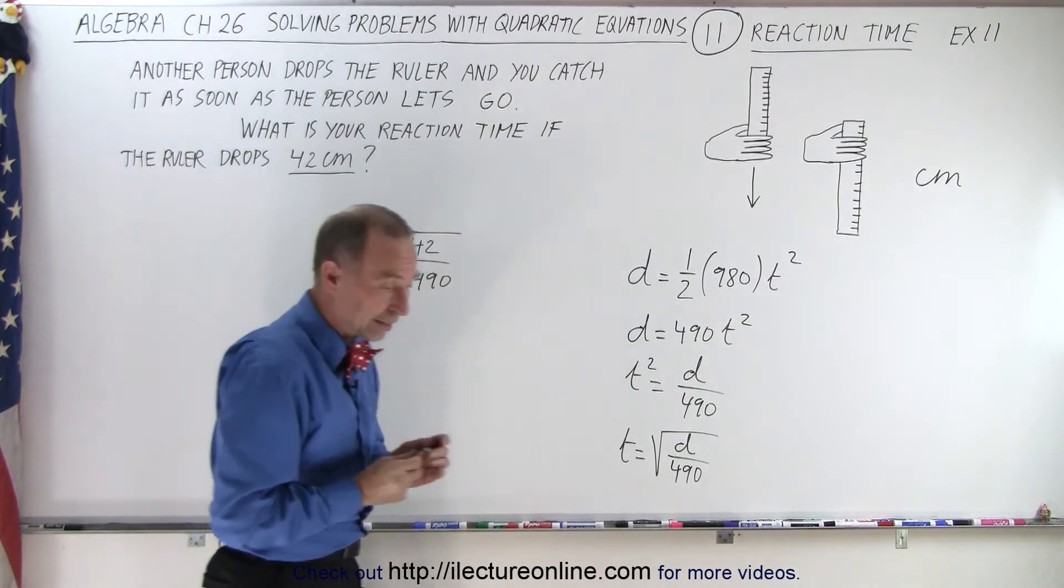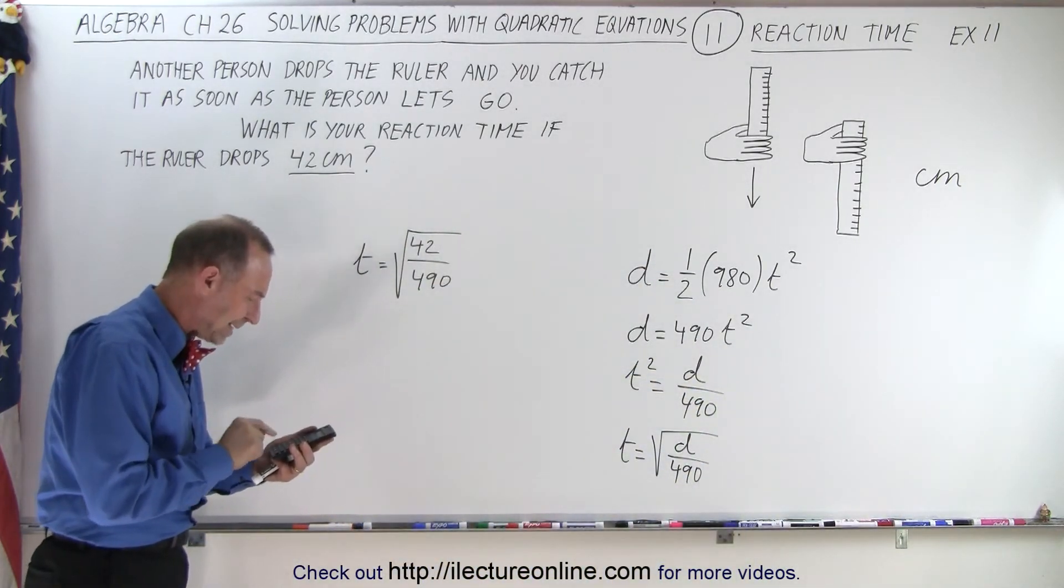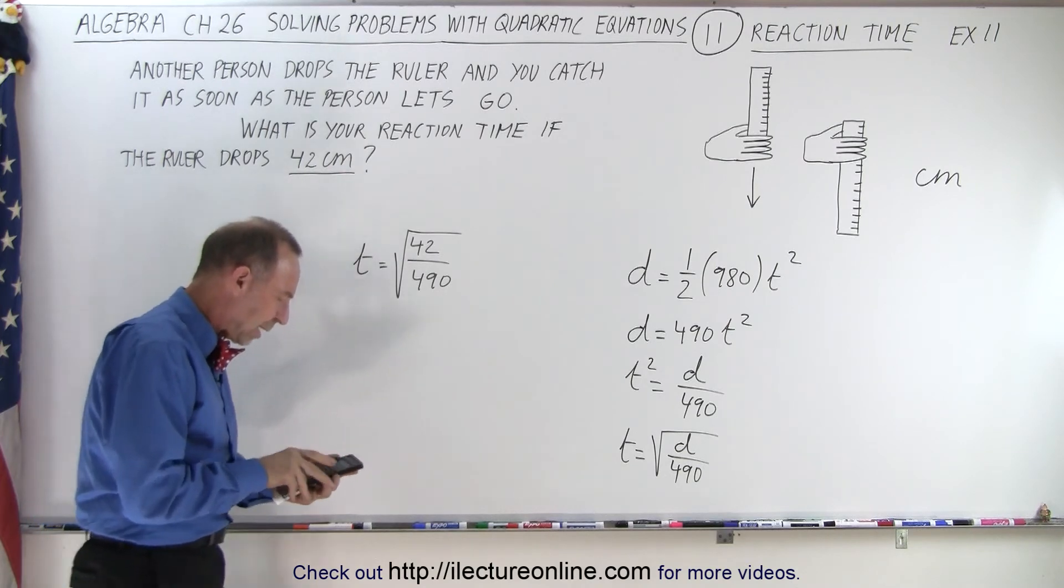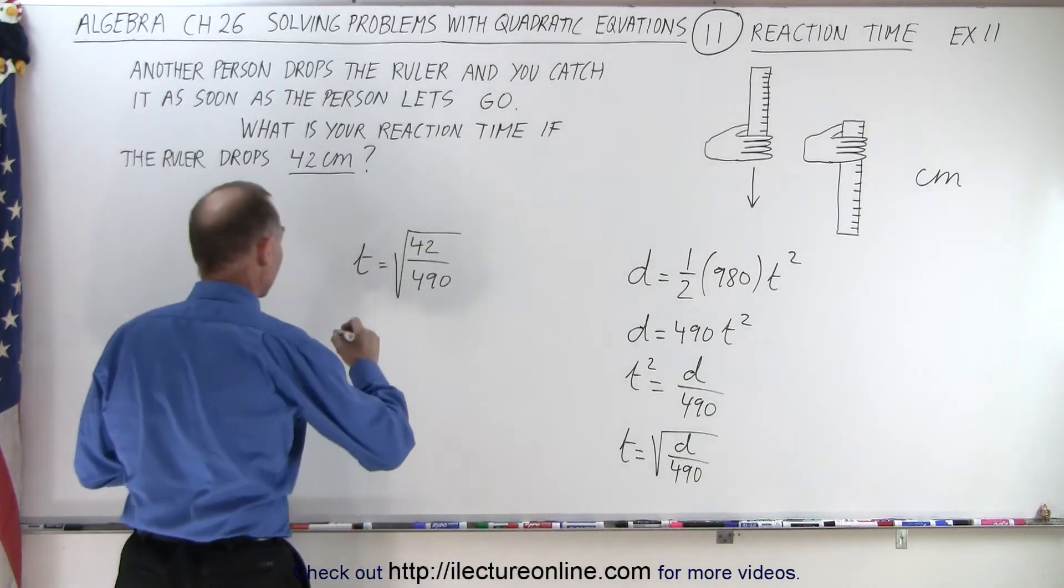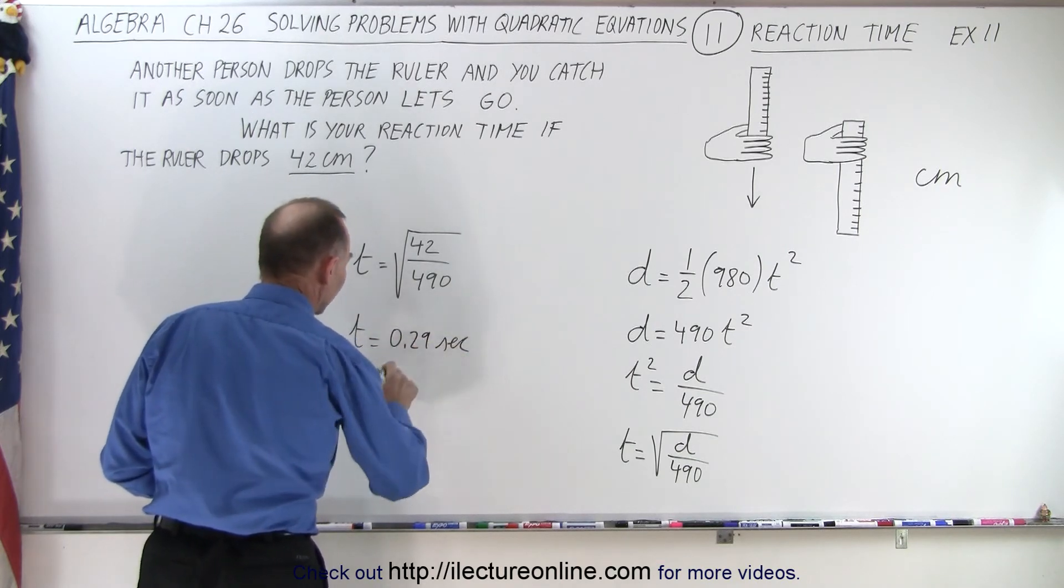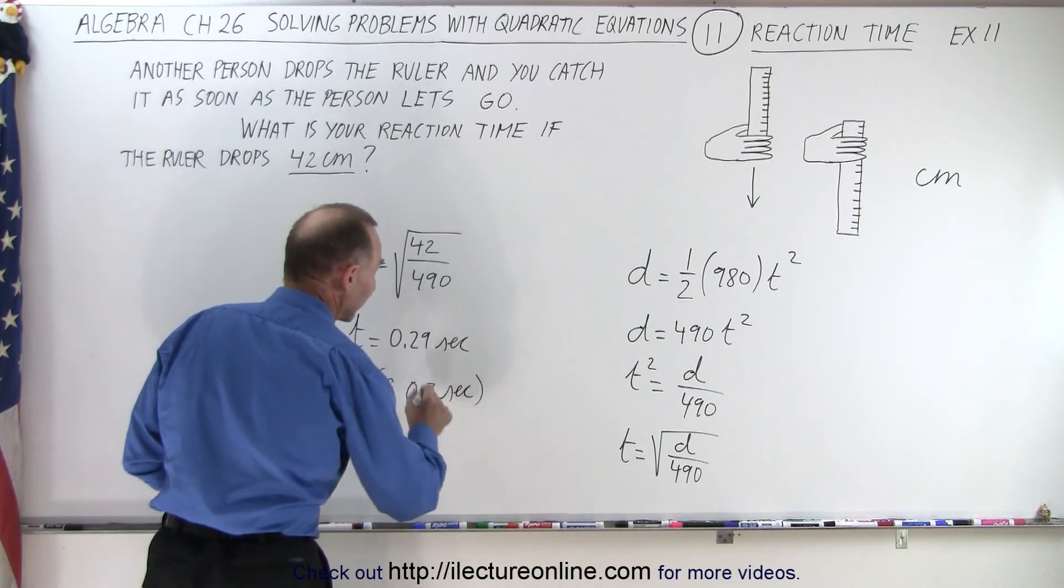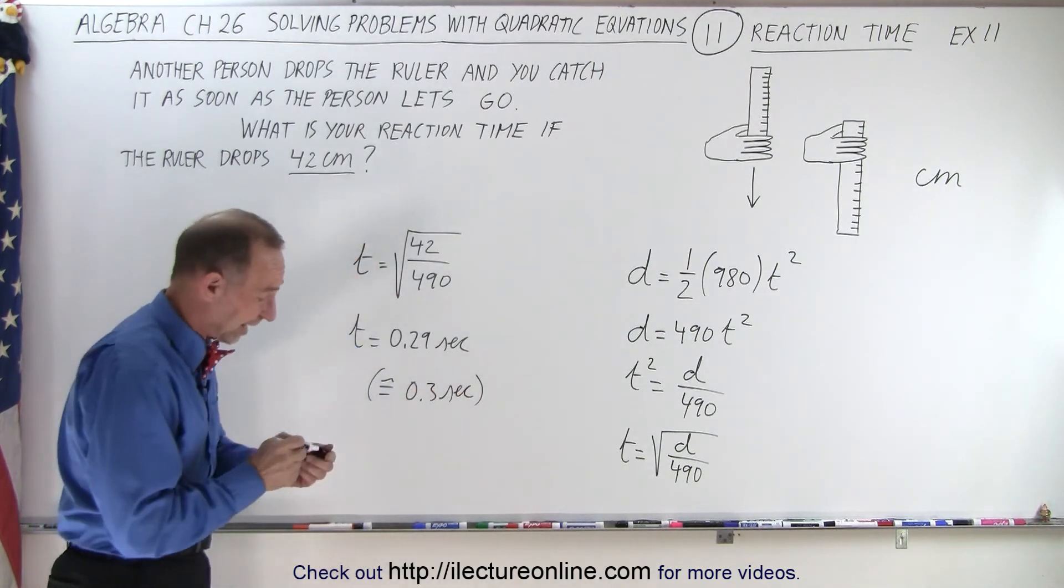So now we take a calculator. We go 42 divided by 490, and we take the square root of that, and we get 0.29. So T equals 0.29 seconds, which is about equal to 0.3 seconds.